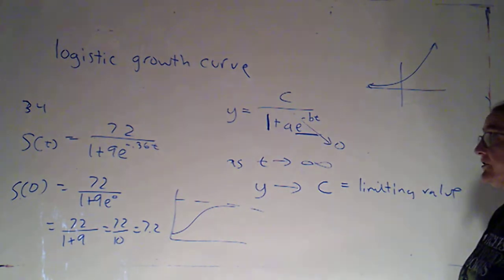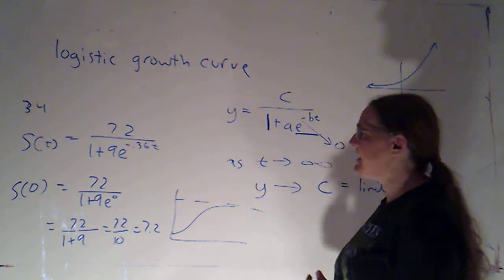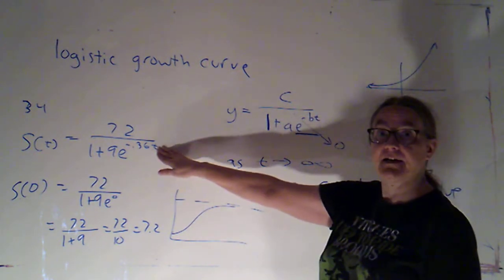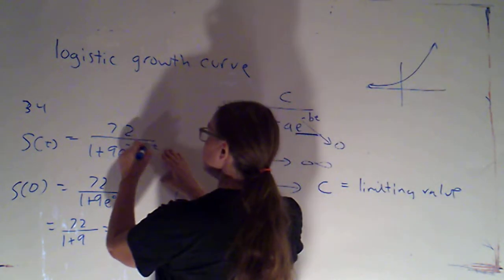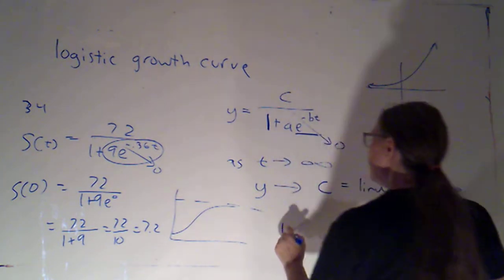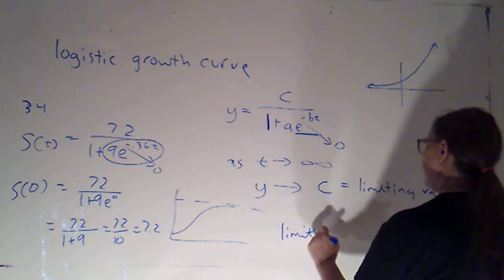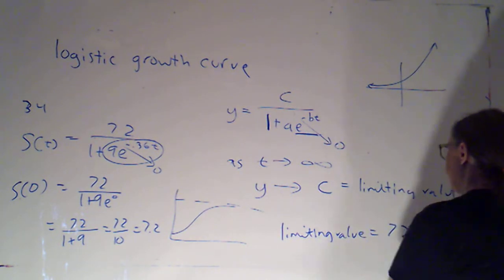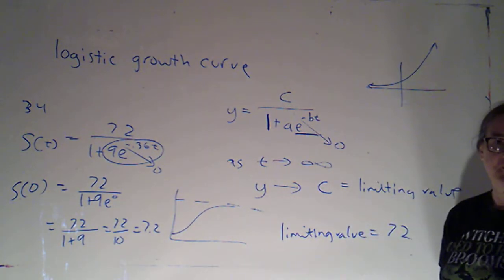And the limiting value, rather than just memorizing what part of the formula it is, remember that that's describing what happens as t goes to infinity. Well, as t goes to infinity, this term is going to be going to 0. So, the limiting value is just going to be 72 over 1, or 72.